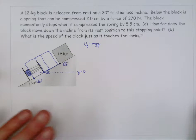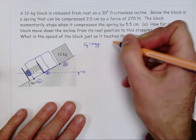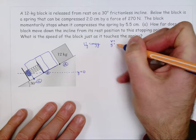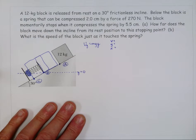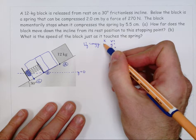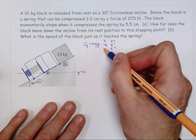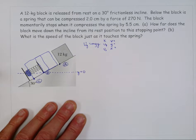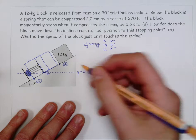It's also helpful at each of these lettered locations to write down what you know about the velocity of the object, the y coordinate of the object, and how far the spring is compressed. The reason I mention those three things is because those are the three types of energy we deal with: speed is related to kinetic energy, y coordinate is related to gravitational potential energy, and x is related to elastic potential energy.